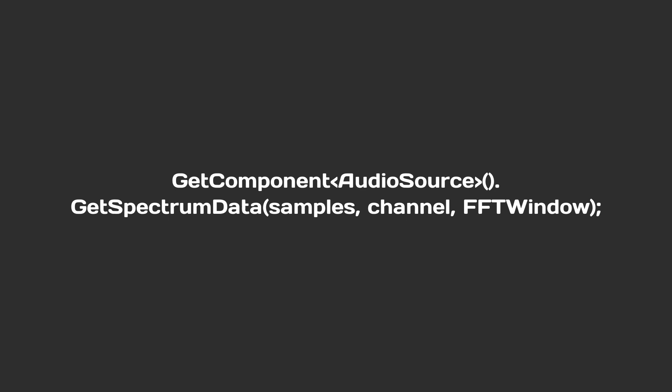Next to samples we have channel, and we'll just put our channel to zero — nothing fancy there. The next parameter is the FFT window, which is a bit more complicated. It is actually an algorithm that determines how the spectrum data will be calculated, and there are a few options to choose from. The best options I've seen for audio visualization are Blackman-Harris, Hamming, or Hanning. I will not go into it too deep, but if you would like to read up on it, you can check out a link in the description below on FFT Windows.